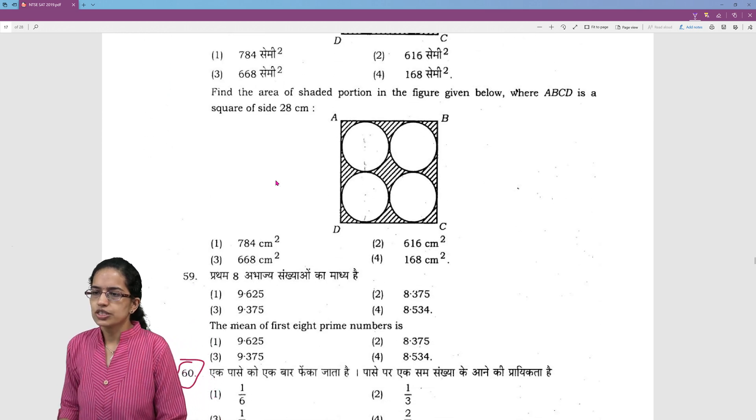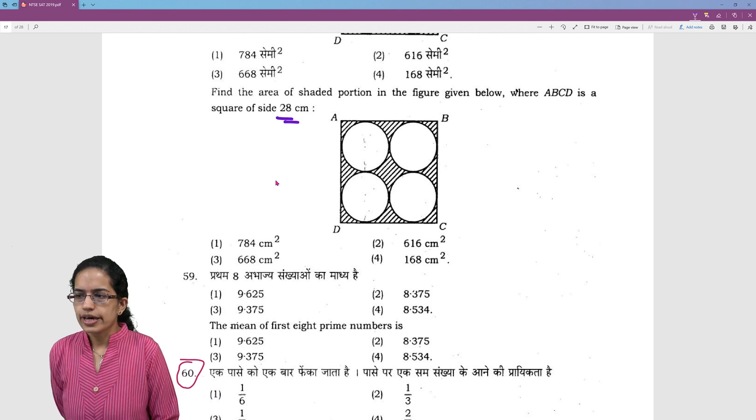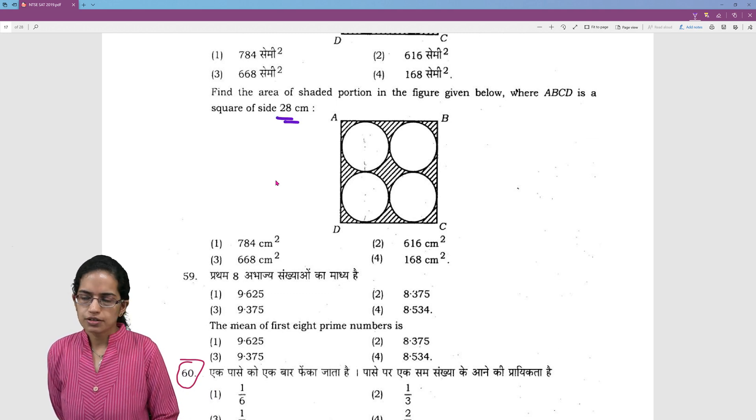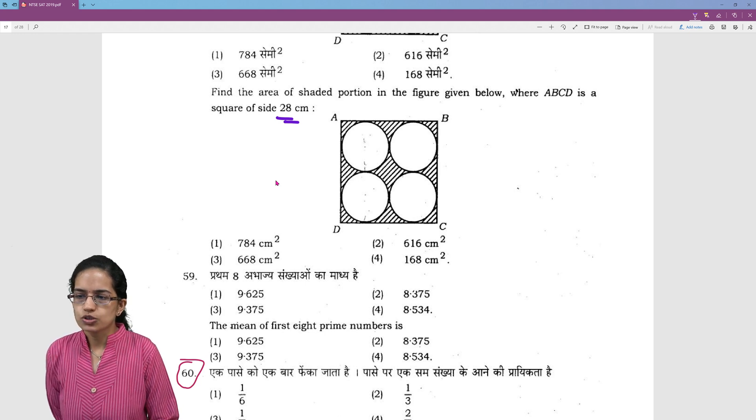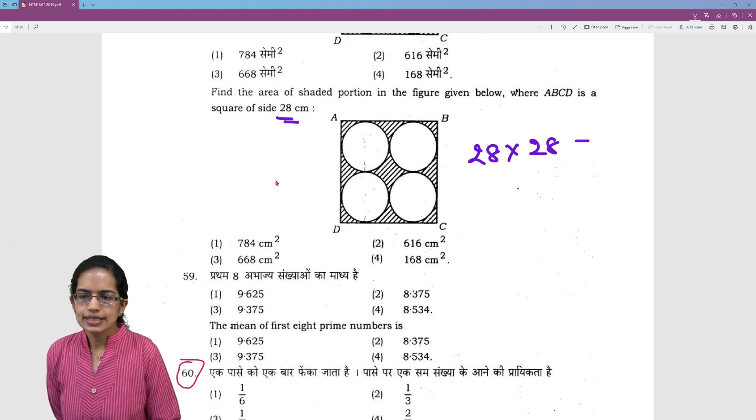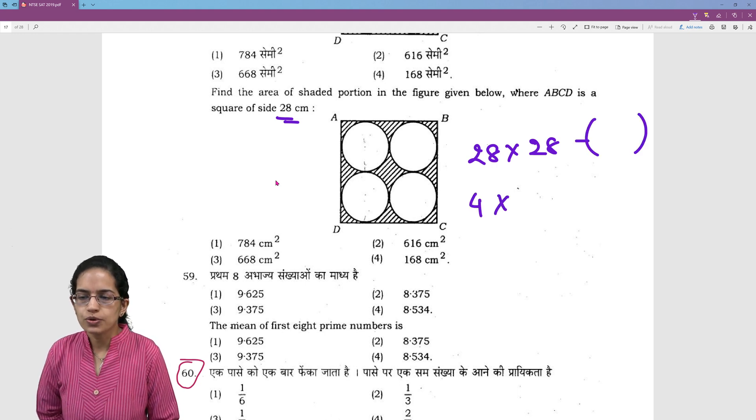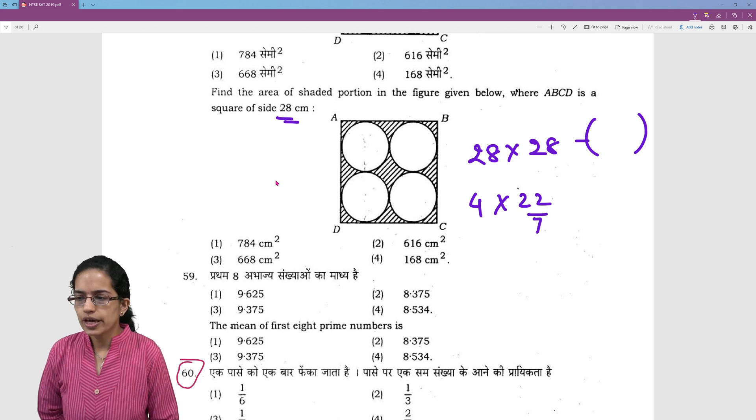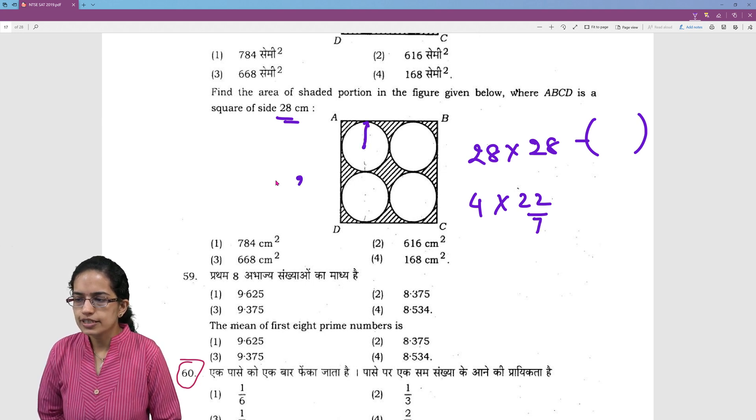Again this is an interesting question. What is asked in this question is you have a, b, c, d as in square. I have to find out the area of the shaded portion. So very simple. What I do is I find out the area of the square which is 28 into 28 minus the area of the four circles. So 4 into pi r square. Now what would be the radius? This would be the radius.